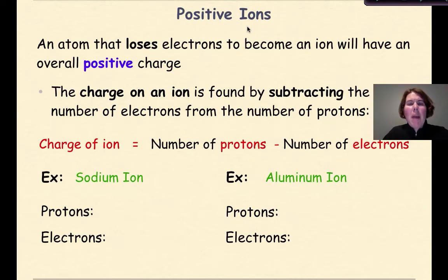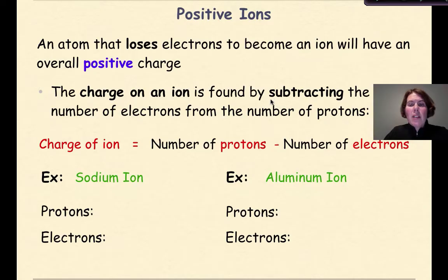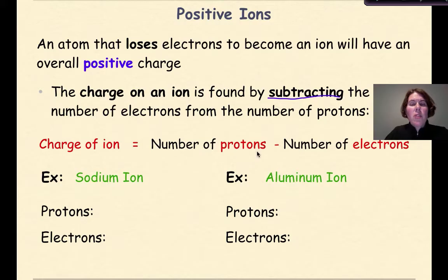Now let's talk specifically about positive ions. These are ions with a positive charge. So an atom that loses electrons to become an ion will have an overall positive charge. The charge on an ion is found by subtracting the number of electrons from the number of protons that are given to you. So to figure out the overall charge, we're going to take our number of protons — which is your atomic number — and subtract it from the number of electrons given to you.